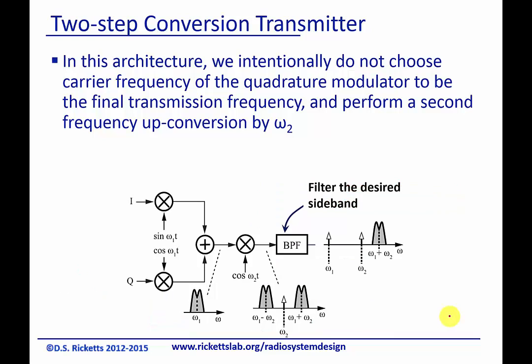Now typically what we're going to do is just filter out one half, because we don't need both sidebands. We can do this through a simple filter, or we saw in the past that we could use more advanced architectures, such as a Hartley transmitter. The reason why that may be undesirable in a two-stage conversion is that you'd have to repeat the transmitter twice for both phases, and that may be undesirable. For simplicity, if we can find a filter that works, that actually works pretty well.